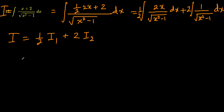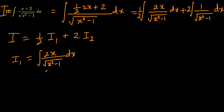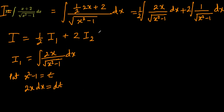To solve i1, which equals the integral of 2x divided by square root of x squared minus 1: notice that the derivative of the function inside the square root in the denominator is the numerator, so it makes sense to substitute x squared minus 1 equals t. This gives 2x dx equals dt, and i1 becomes the integral of dt divided by square root of t.